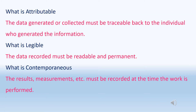What is attributable? The data generated or collected must be traceable back to the individual who generated the information. For example, if you recorded work done on the maintenance of an equipment in a paper format or in a computer system, the data recorded should clearly describe the details of the person who performed the maintenance.